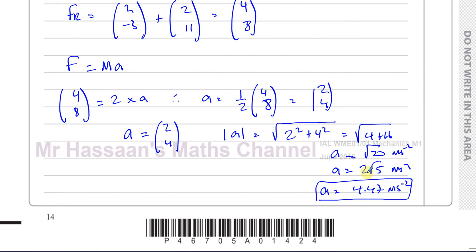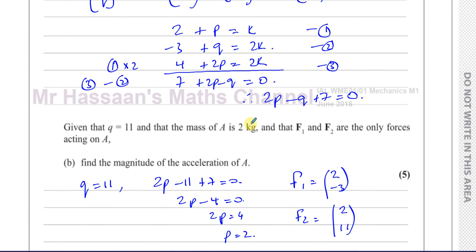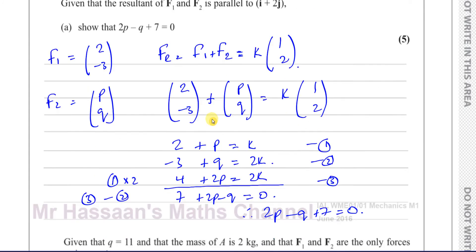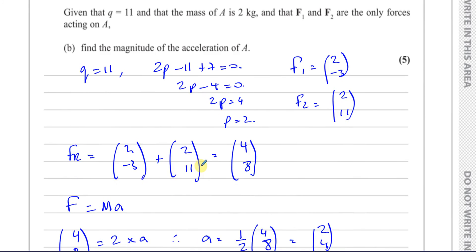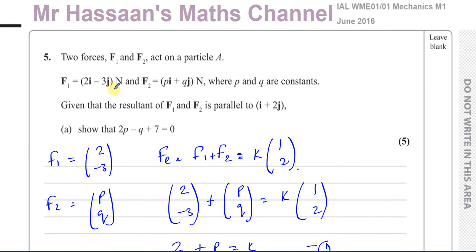That's the magnitude of the acceleration of A, because that was the resultant force acting on A, which was (4, 8). So there's the answer to part B of question 5 from the June 2016 paper.